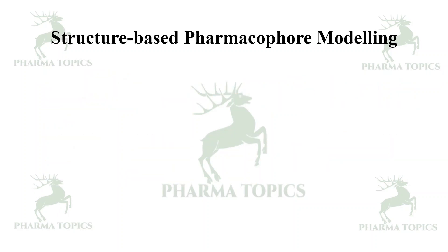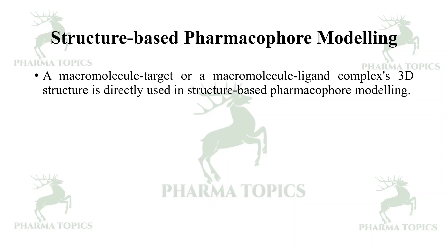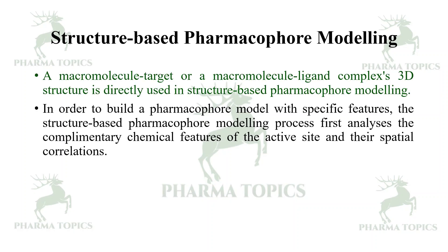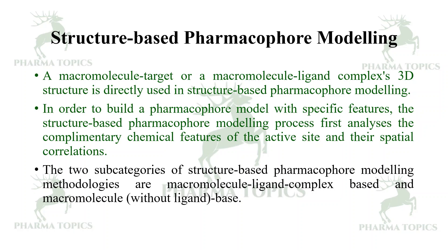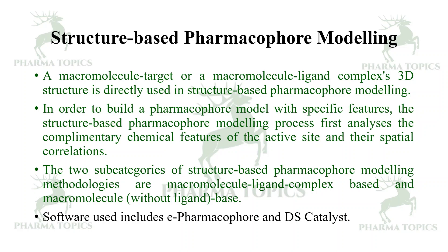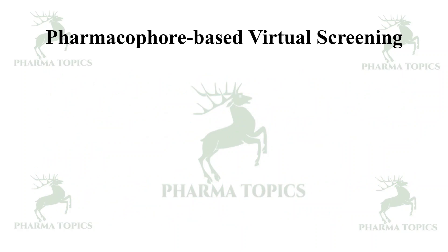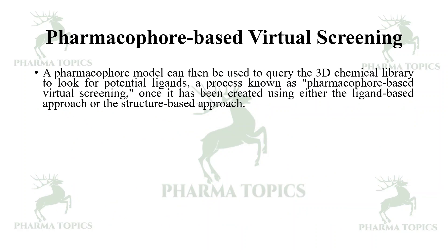The next type is structure-based pharmacophore modeling. A macromolecular target or a macromolecule-ligand complex 3D structure is directly used in structure-based pharmacophore modeling to build a pharmacophore model with specific features. This approach first analyzes the complementary chemical features of the active site and their spatial correlations. The two subcategories are macromolecule-ligand complex-based and macromolecule-based (without the ligand). Software used includes ePharmacophore and Discovery Studio Catalyst.